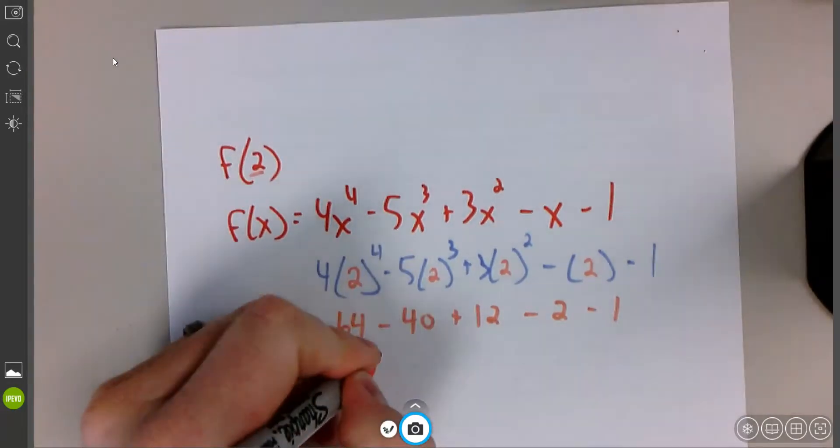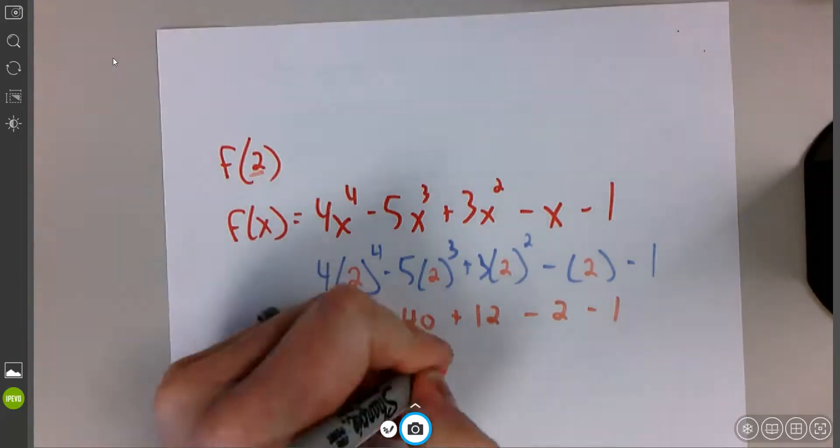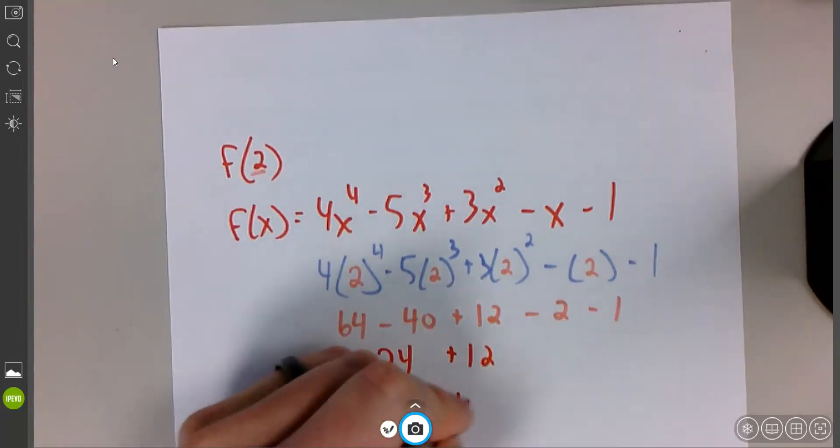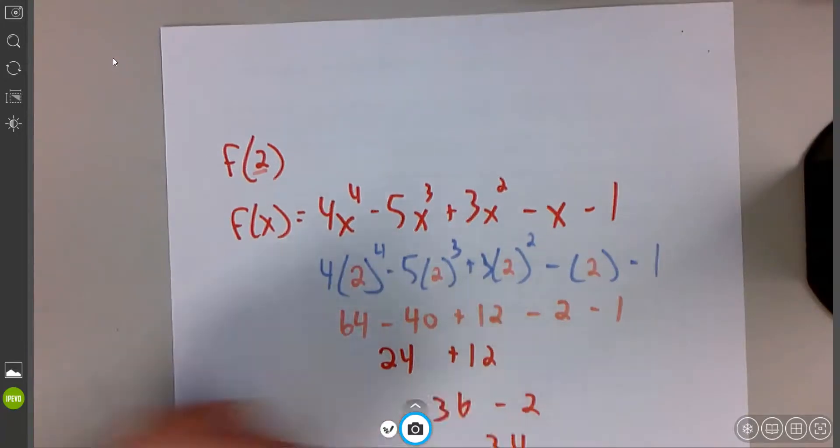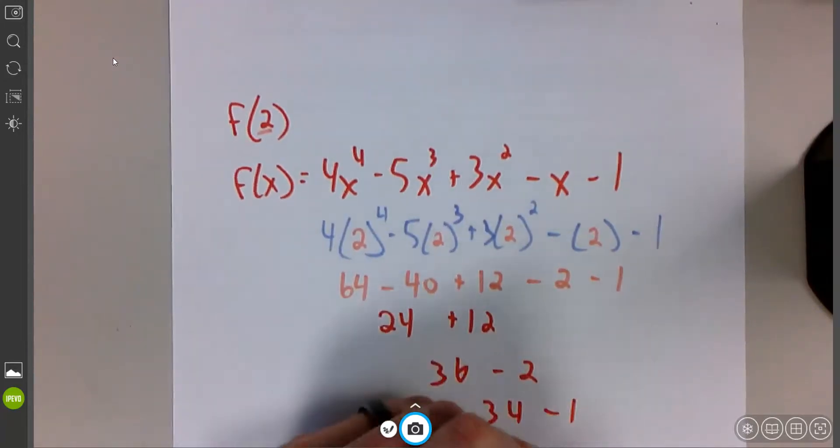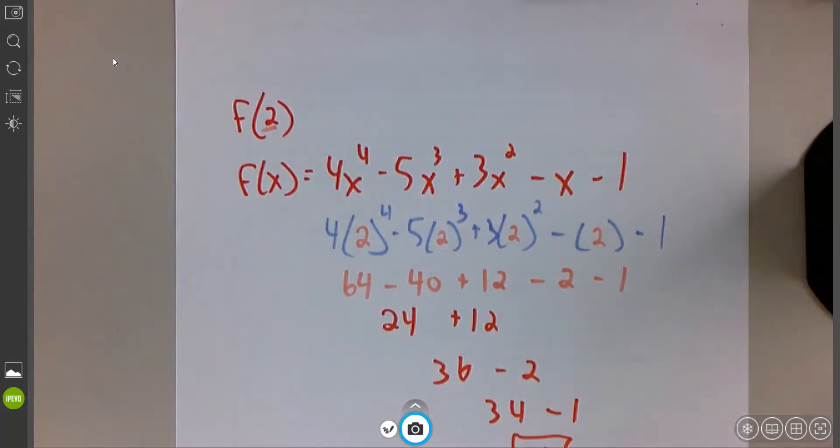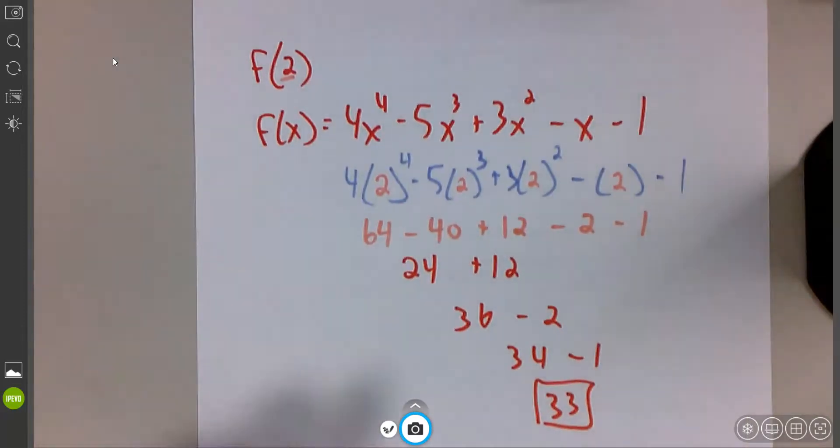Okay, 64 minus 40, 24. 24 plus 12, 36. 36 minus 2, 34. And 34 minus 1 is 33. By hand, I evaluated this function at that specific point.